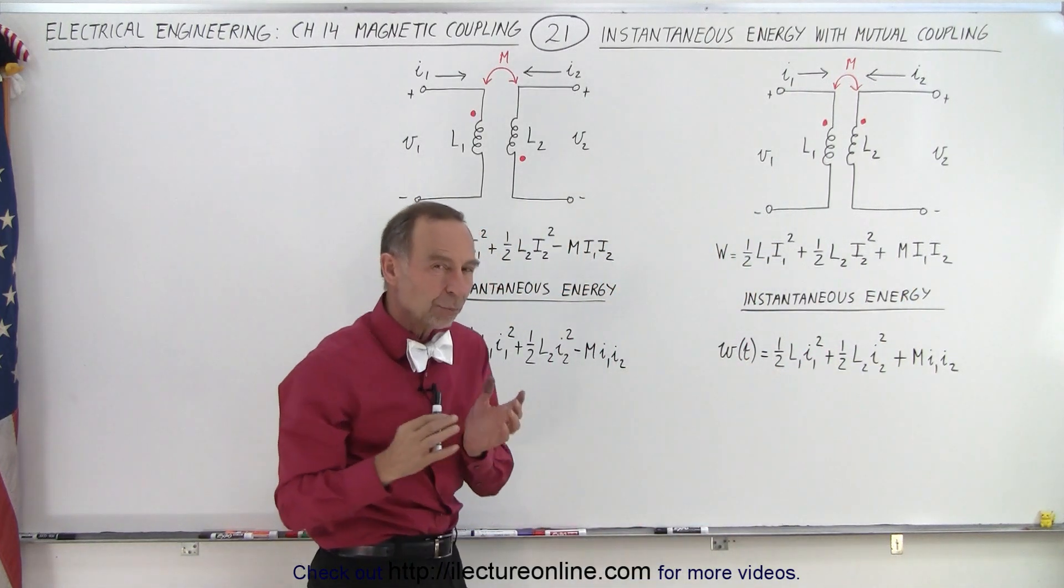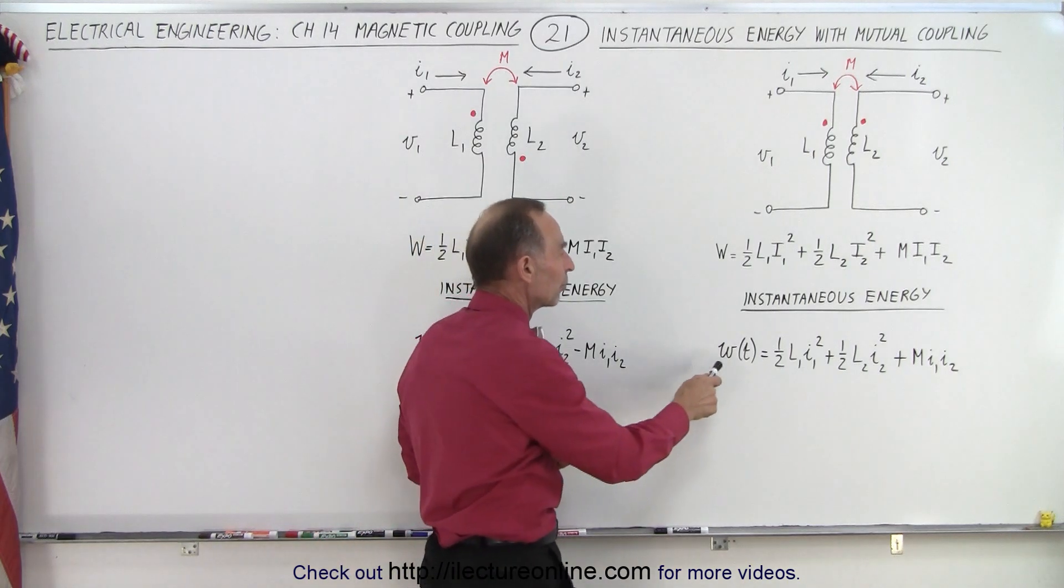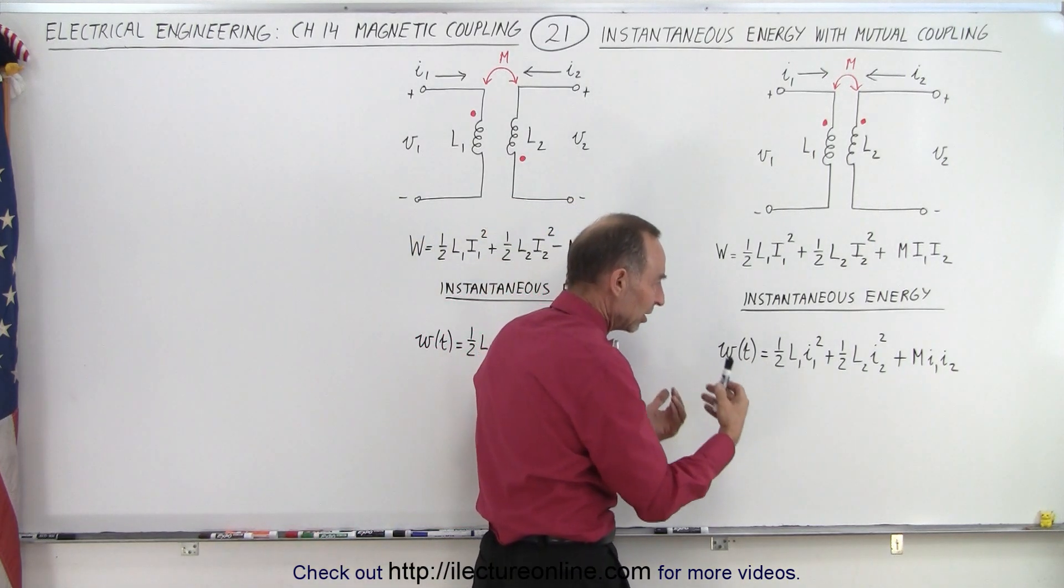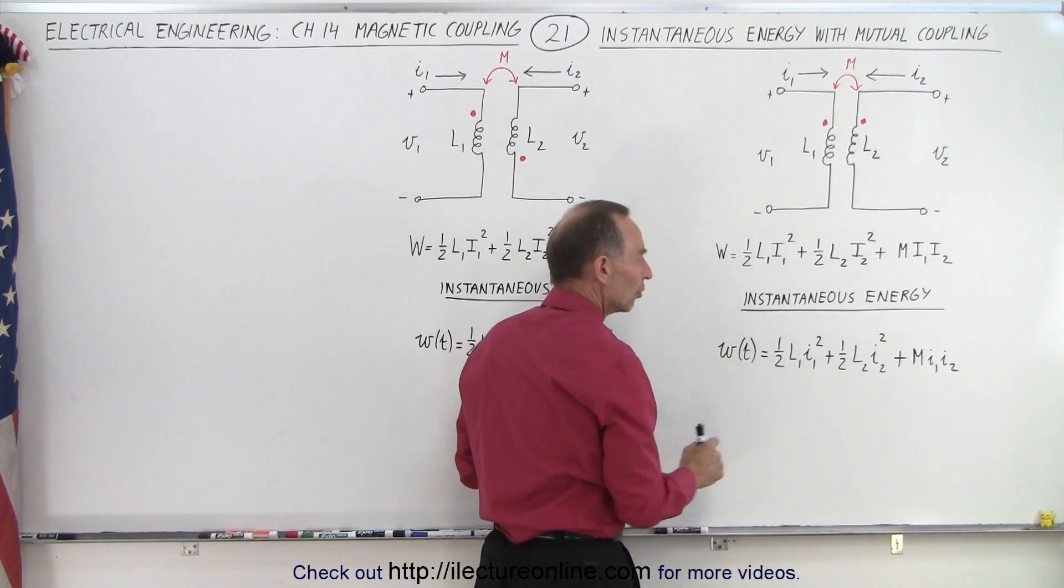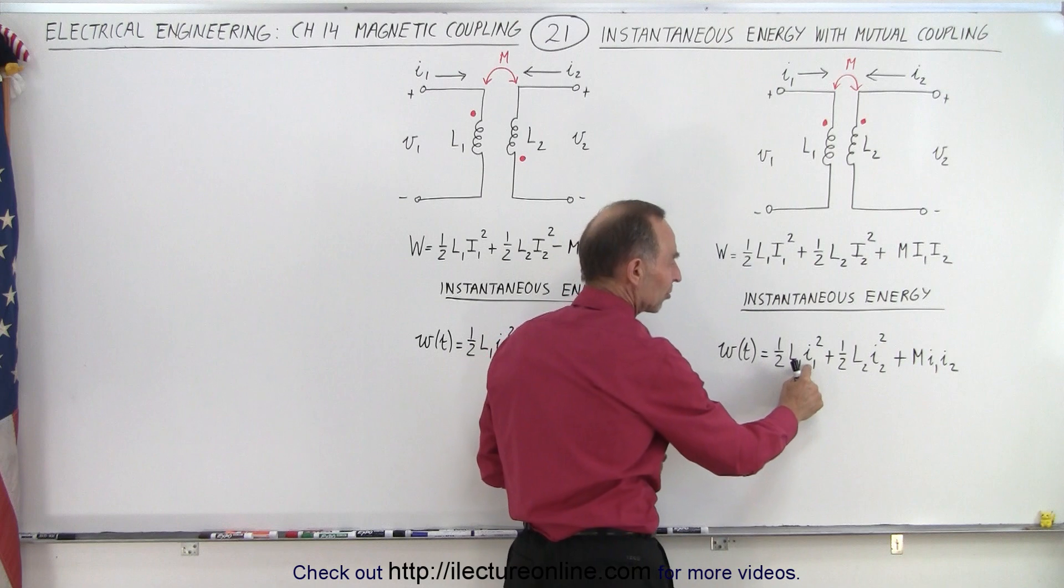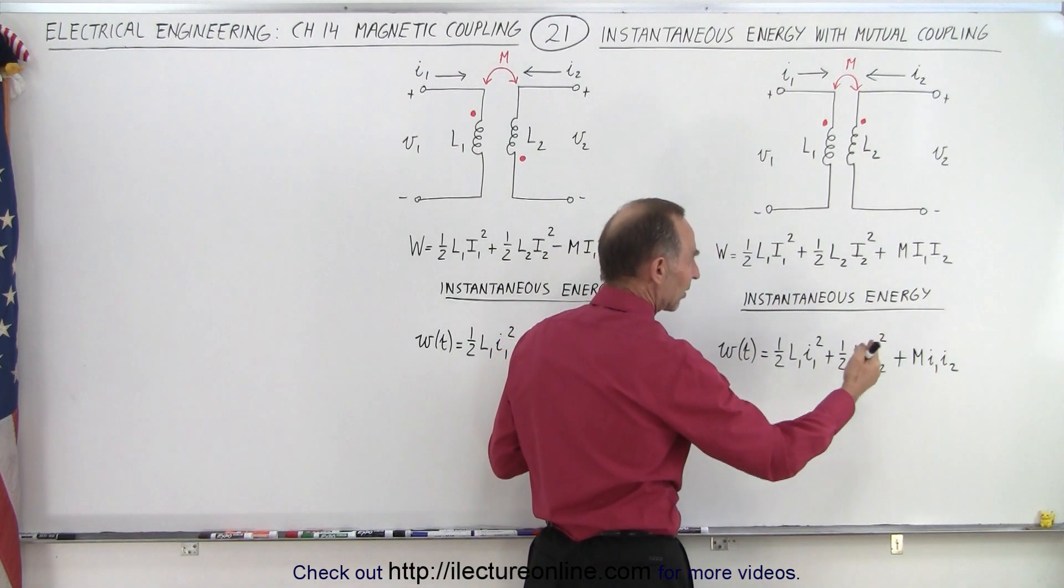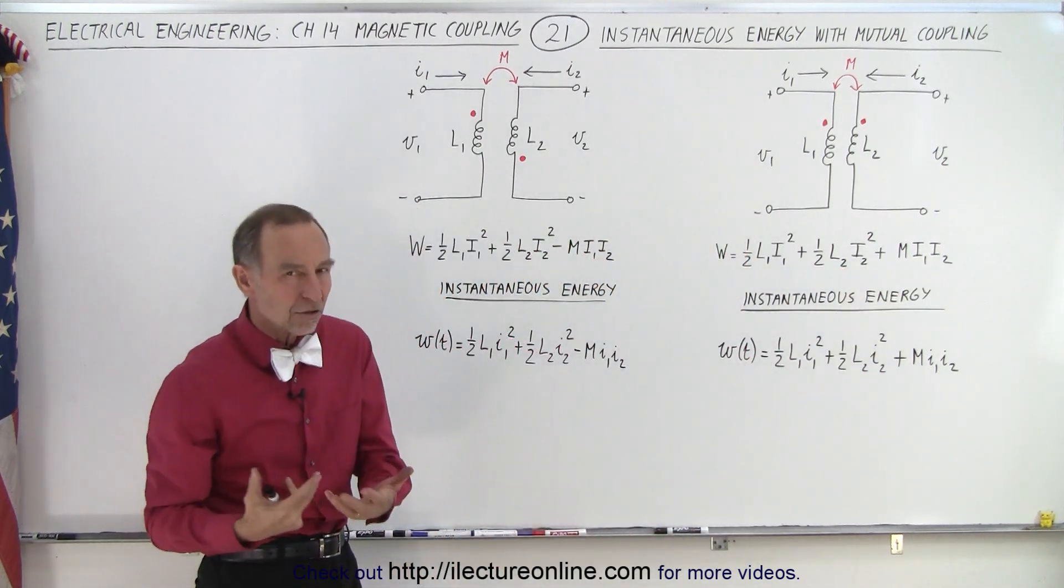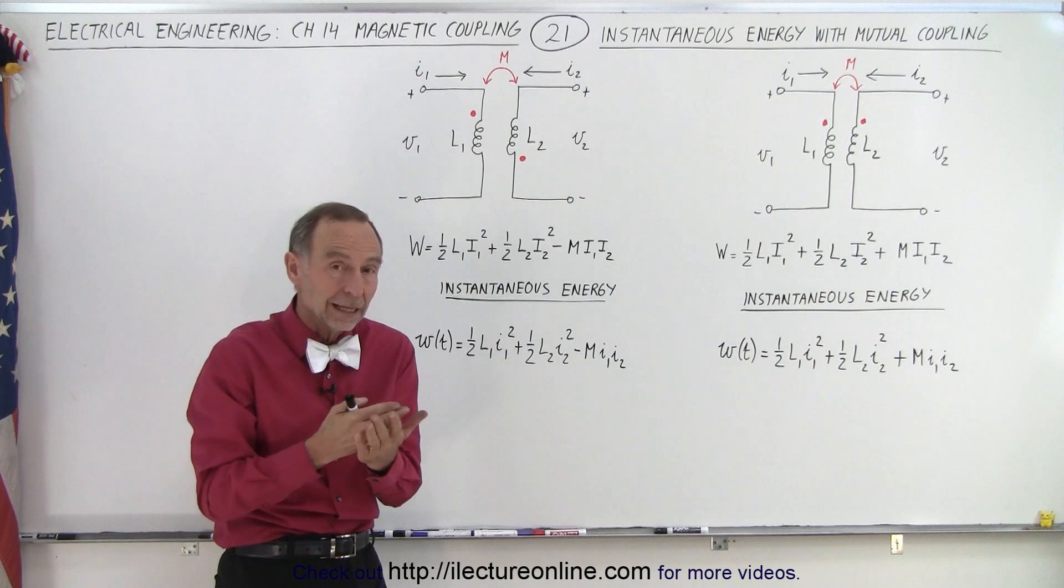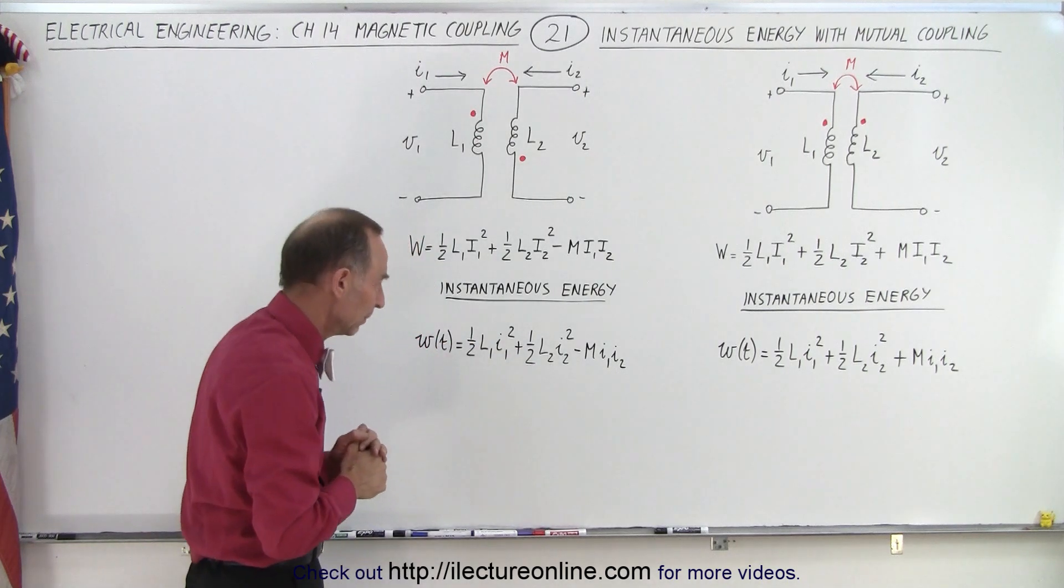But if you want to express it in terms of the instantaneous energy then it becomes a function of time because it will constantly change. It will depend what the values are of I1 and I2. The equation looks exactly the same but instead of using the maximum values for I1 and I2 we use the instantaneous values which you would have to calculate for a specific time and we'll show you an example of that later.